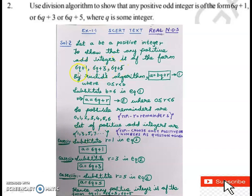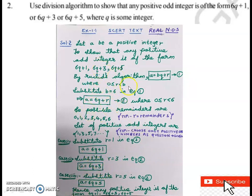We find three cases. Case 1: R = 1, so A = 6Q + 1. Case 2: R = 3, so A = 6Q + 3. Case 3: R = 5, so A = 6Q + 5. In previous videos the letters used were M, N, or P, but here the question directly gives Q, so no need to assume anything. Therefore, any positive odd integer is of the form 6Q + 1, 6Q + 3, or 6Q + 5.